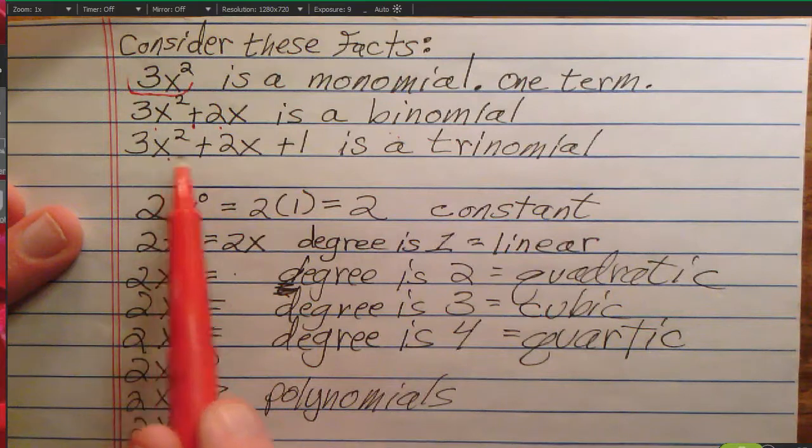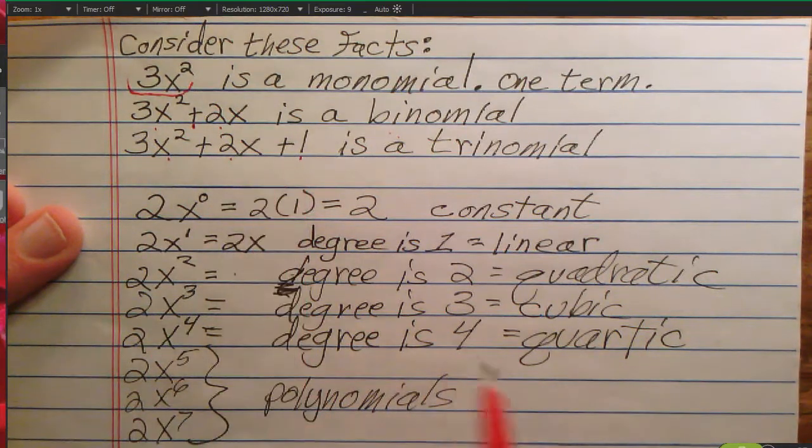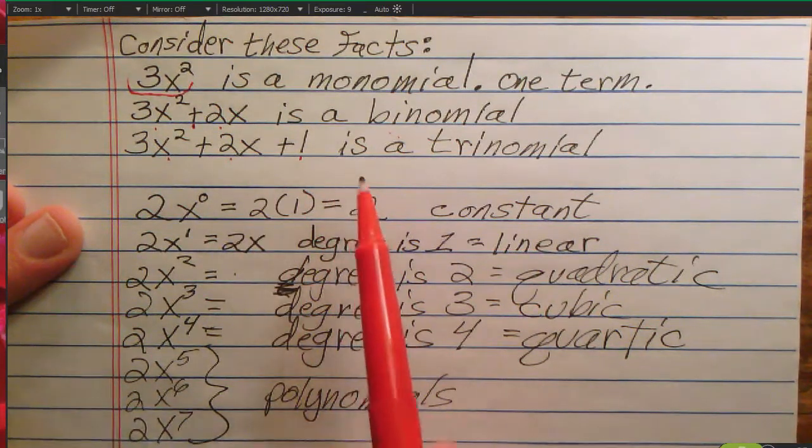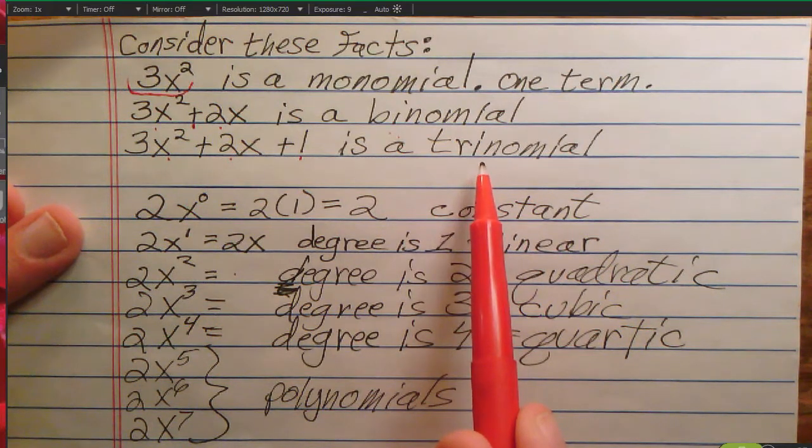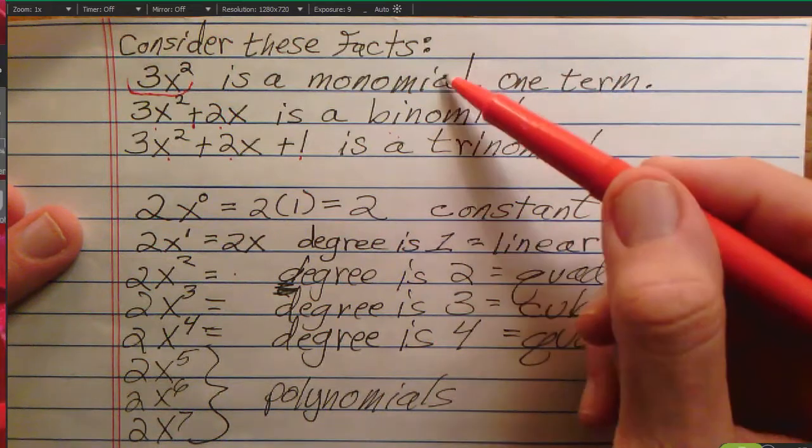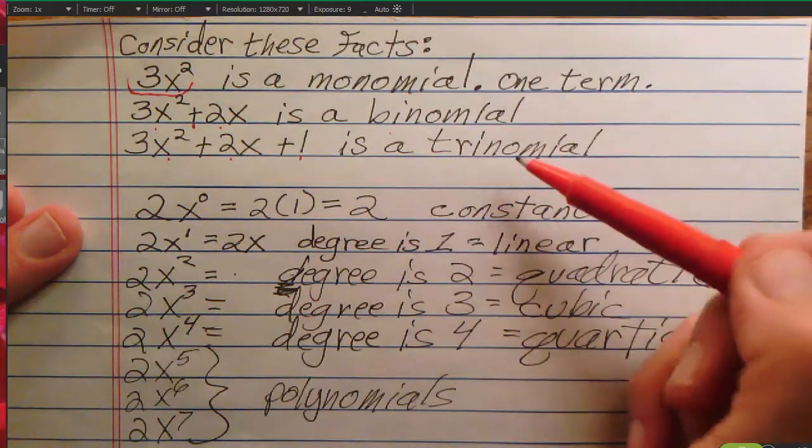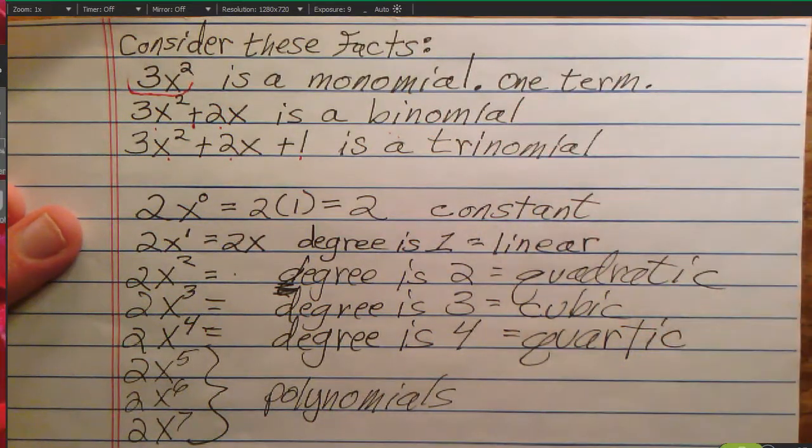When you have three terms connected together with plus signs, you have a polynomial that's called a trinomial. We have monomials, we have binomials, trinomials. If we have four or more terms, we don't have a special name for it at all.